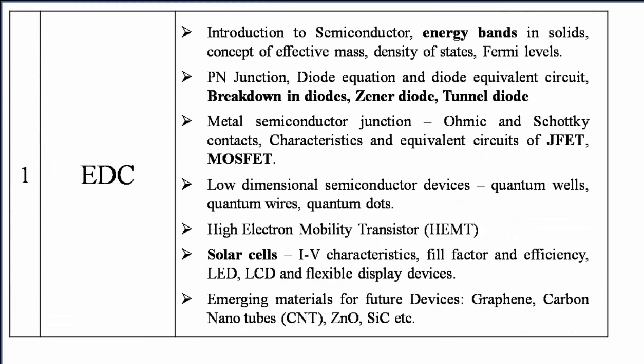Let us talk about EDC in detail. PN junction diode is very very important — you are having breakdown types: Zener breakdown, avalanche breakdown, and tunnel diode breakdown. These are very important. You need to be familiar with JFETs and MOSFETs.